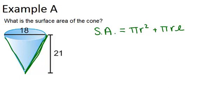In order to do this, we'll actually need to figure out the slant height, because it's not given to us. We can see that the radius of the circle is 9, because it's half of the diameter. And we know that the overall height for the cone is 21, but we don't know the slant height.